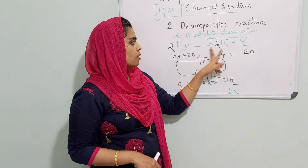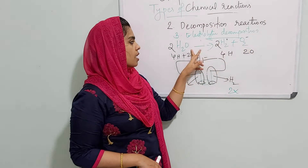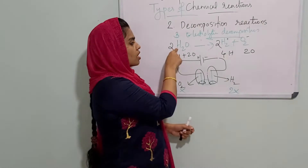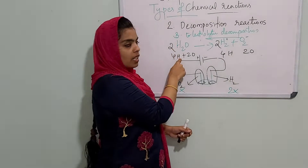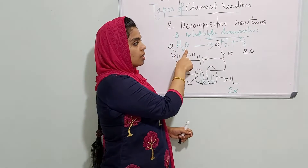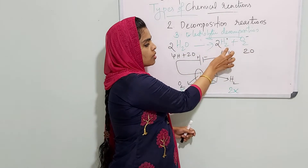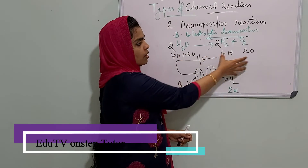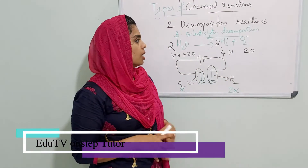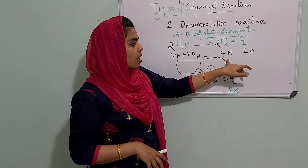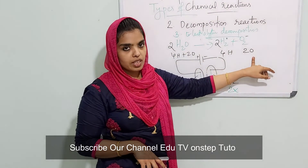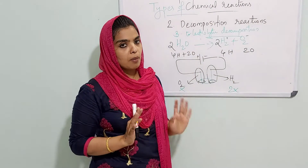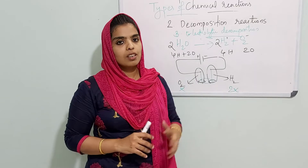The balanced equation for the electrolysis of water is: 2H2O gives 2H2 plus O2. On the reactant side we have 2H2O, which contains 4 hydrogen and 2 oxygen atoms. On the product side, 2H2 has 4 hydrogen atoms and O2 has 2 oxygen atoms. The equation is balanced — hydrogen and oxygen ratio is 2:1.